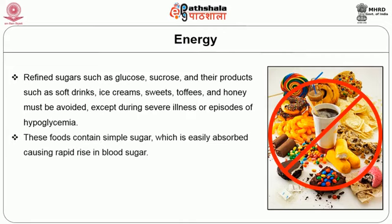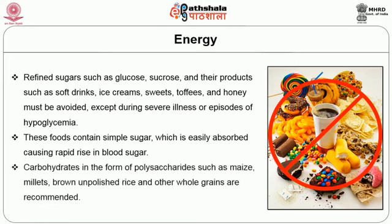These foods contain simple sugar which is easily absorbed, causing rapid rise in blood sugar. Hence carbohydrates in the form of polysaccharides such as millets, brown unpolished rice, and other whole grains are recommended. When carbohydrates are taken with fiber, they help maintain blood sugar level and are also good anti-hypertensive agents. When millets are taken, one should note that almost all millets contain the same amount of calories and only the fiber content differs, so the quantity consumed daily should be taken into consideration.